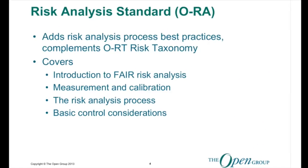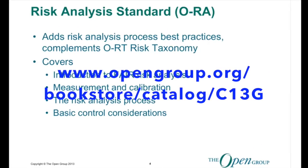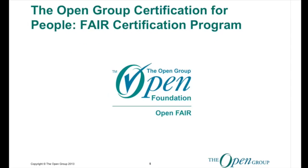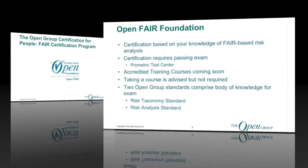The companion standard to the Taxonomy Standard is called the Risk Analysis Standard, and it adds a set of best practices around doing a risk analysis to complement the taxonomy. It covers such things as how to do a FAIR-based risk analysis, measurement and calibration, the risk analysis process, and some basic control considerations. Those two pieces comprise the body of knowledge for the OpenFAIR Certification Program.